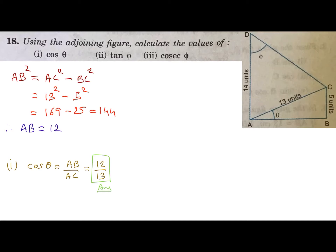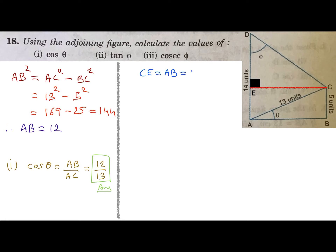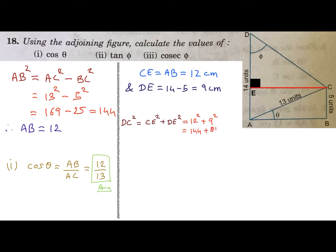To find the remaining two ratios from triangle ADC, there must be a 90-degree angle within the triangle, so construct CE perpendicular to AD. From the construction, CE = AB = 12 units and DE = 14 - 5 = 9 centimeters. Now using Pythagoras theorem to find the third side DC: DC² = CE² + DE², and that comes out to be DC = 15 centimeters.